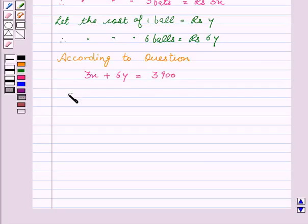Now, on taking 3 common, we get X plus 2Y equal to Rs. 1300. So, let this be our first equation.